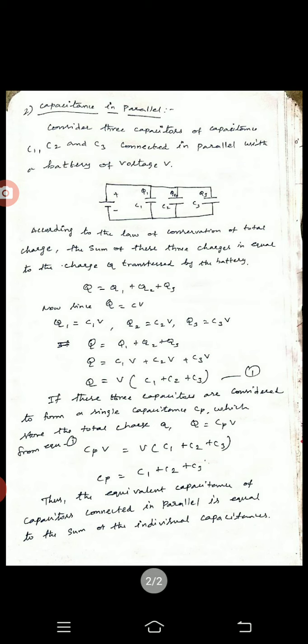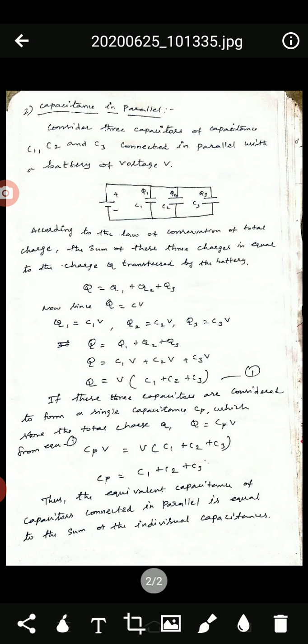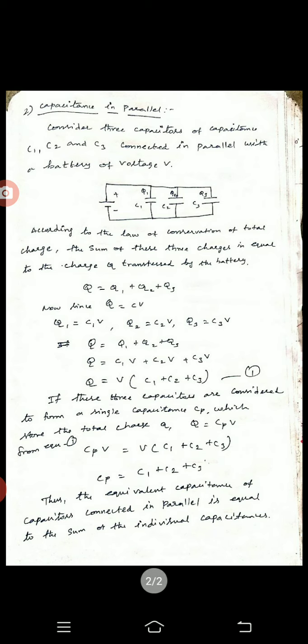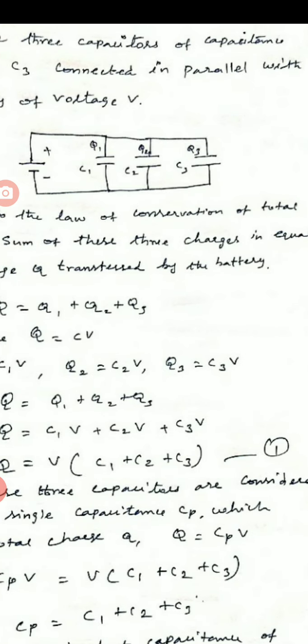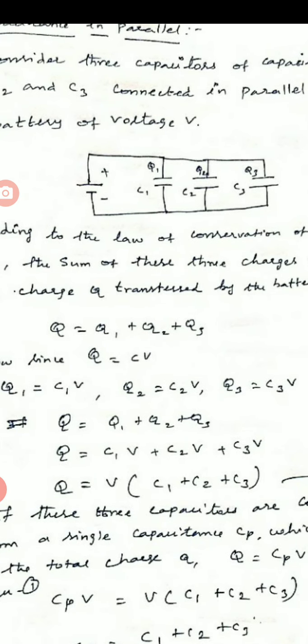Consider three capacitors of capacitance C1, C2 and C3 connected in parallel with a battery of voltage V. Three capacitors C1, C2, and C3 are connected in parallel. See the diagram.